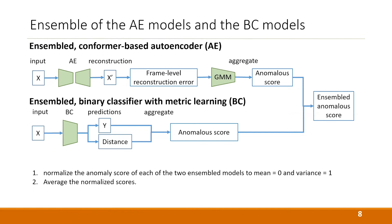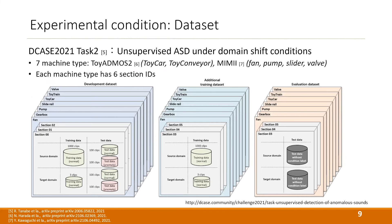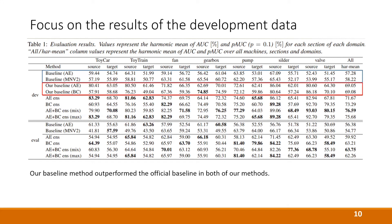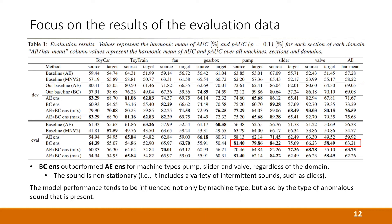Finally, we normalize the anomaly score of each of the two models to mean 0 and variance 1, and average the normalized scores. We use the development set from DCASE 2021 Task 2 for unsupervised anomalous sound detection under domain-shift conditions. There are seven machine types, and each machine type has six section IDs. Our proposed methods outperform the official baseline in both methods. BC ensemble outperforms AE ensemble for machine types pump, slider, and valve, regardless of the domain.